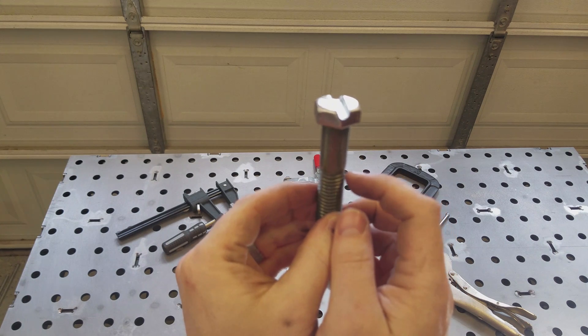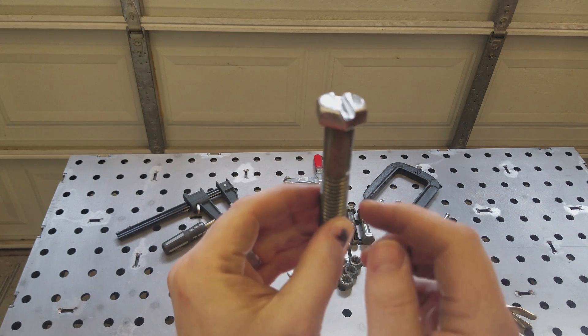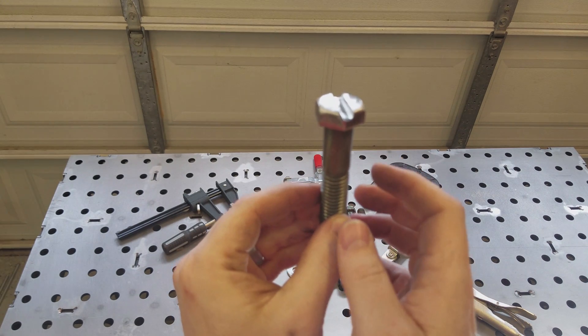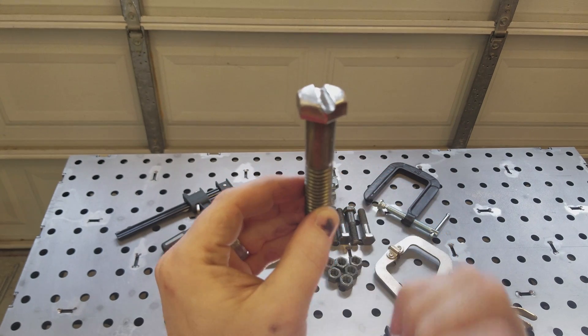So now what we're going to do is cut the threaded section off. I'll probably just do that with a cut off wheel in the angle grinder, just snip that right off there and I'll bring you back.